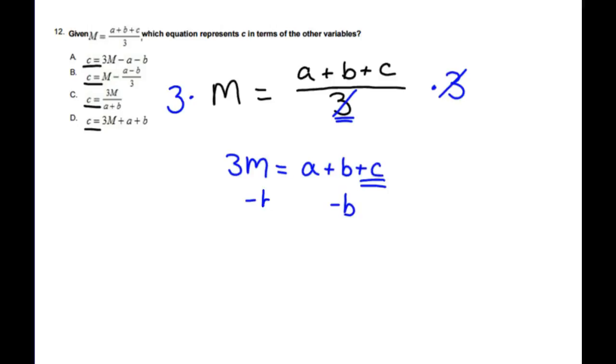So the variables act the same. So I'm going to subtract B. We subtract B. Well, B isn't like M, so I can't combine them. It's just 3M minus B. And that equals, these cancel out, and I've got A plus C.